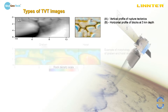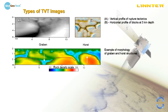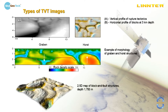Well known examples of morphology, but in TVT interpretation. Here are the pictures of Graben and Horst structures. Red color is a dense rock — the Horst. Blue color is a decompaction zone — the Graben. We also use 2.5D maps to see the geometry of the area.